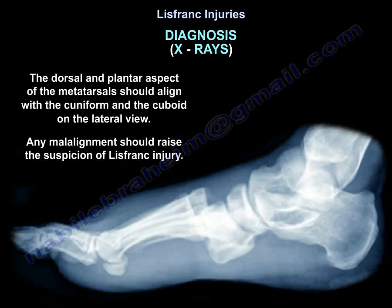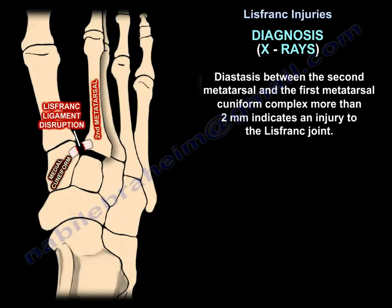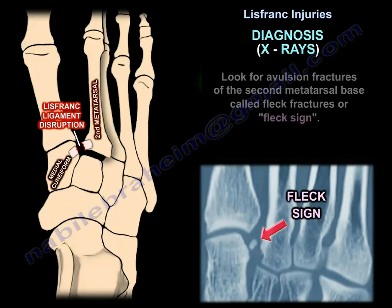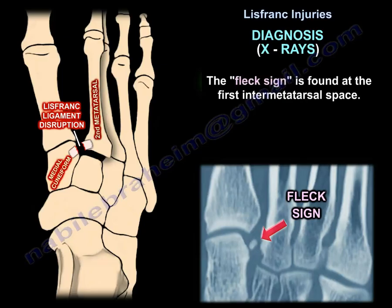On the lateral view, the dorsal and plantar aspect of the metatarsals should align with the cuneiform and cuboid. Any malalignment should raise suspicion of Lisfranc injury. Diastasis between the second metatarsal and the first metatarsal-cuneiform complex of more than 2 mm indicates injury to the Lisfranc joint. Also look for avulsion fractures of the second metatarsal base — called fleck fractures or the fleck sign — found at the first intermetatarsal space.